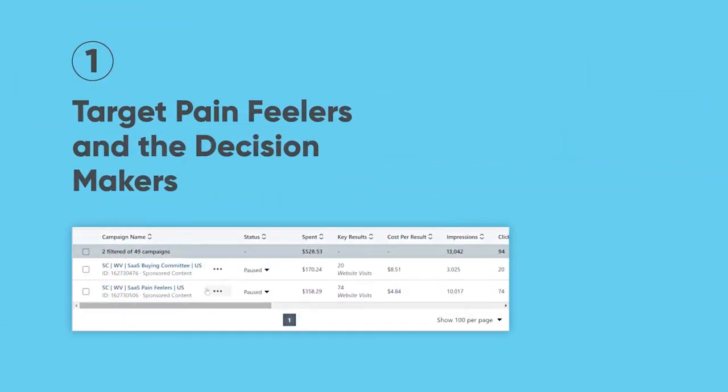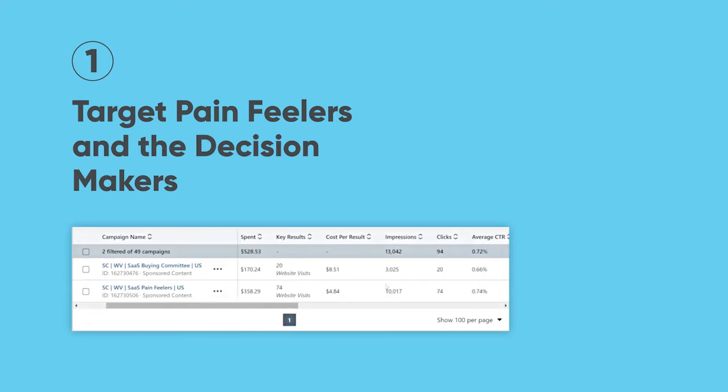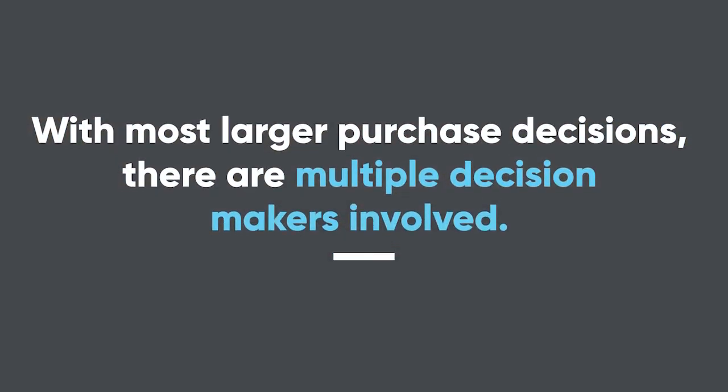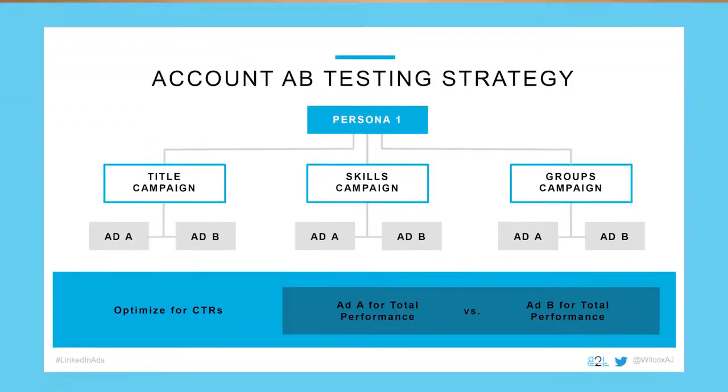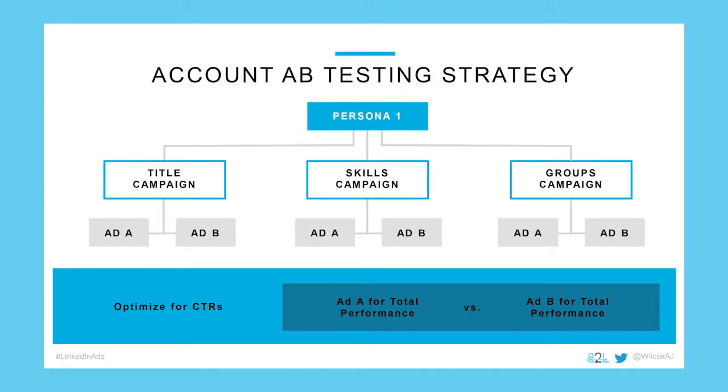Number one is being able to target the pain feelers and the decision makers. Most of us think to target those who feel the pain that our SaaS software solves — and that's a great thing to do. But with most larger purchase decisions, there are going to be multiple decision makers involved in that buying committee. There is significant opportunity in also targeting the members of that committee. The power in LinkedIn's targeting is that we can break these groups into different campaigns and measure their impact and performance separately.